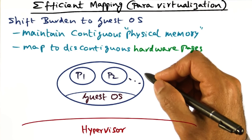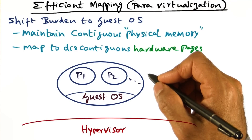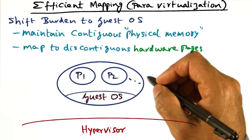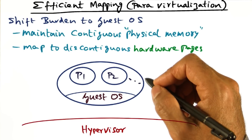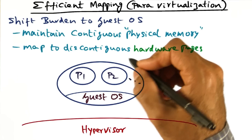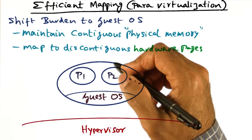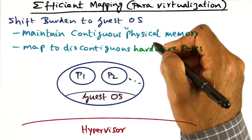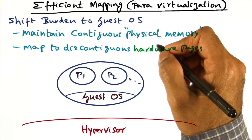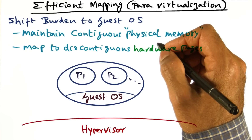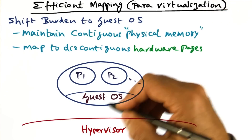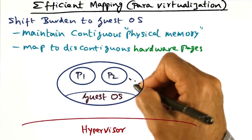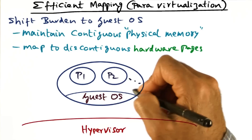On an architecture like Intel, where the page table is a data structure of the operating system and is also used by the hardware to do address translation, the responsibility of allocating and managing the hardware page table data structure can be shifted into the guest operating system. In a fully virtualized setting, it's not possible to do that, because the operating system is unaware that it is not running on bare metal. But in a para-virtualized setting, it is more efficient to push this mapping handling into the guest operating system.